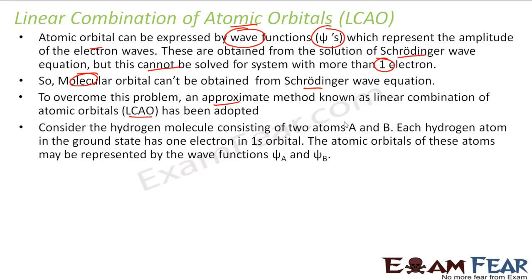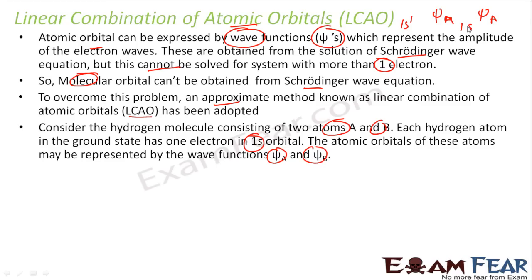Let's assume there is a hydrogen molecule. It has two atoms, A and B. Each hydrogen atom in the ground state has one electron in the 1s orbital. So the atomic orbitals of these can be represented by wave functions psi_A and psi_B. So I have two hydrogen atoms, each with a 1s orbital, represented by psi_A and psi_B functions.